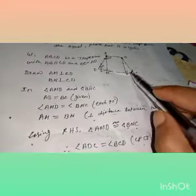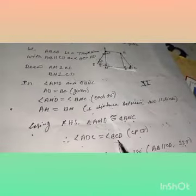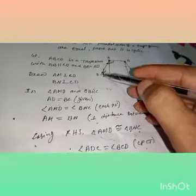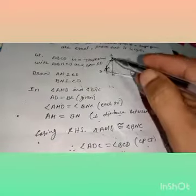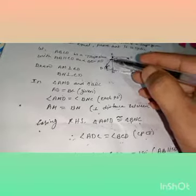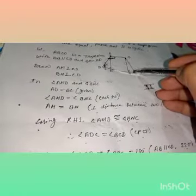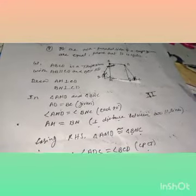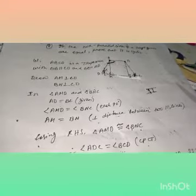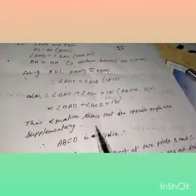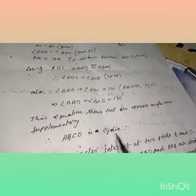Note that angle ADM equals angle BCN, but since those are the full angles at D and C, we can write angle ADC equals angle BCD directly. This equation shows that the sum of opposite angles BAD and BCD is 180 degrees — the opposite angles are supplementary, meaning their sum is 180 degrees. Since in a cyclic quadrilateral the sum of opposite angles is always 180 degrees, therefore ABCD is cyclic. The trapezium ABCD is cyclic.